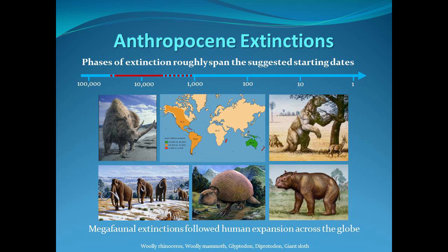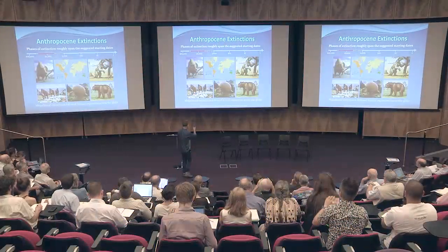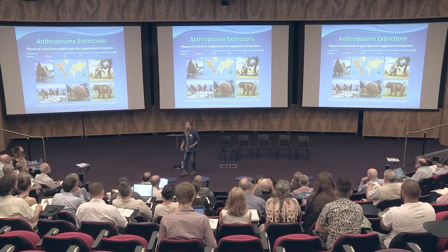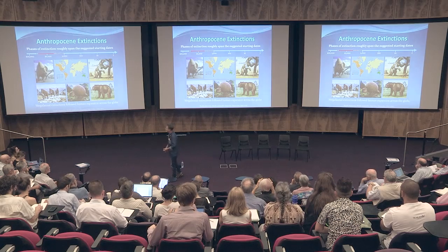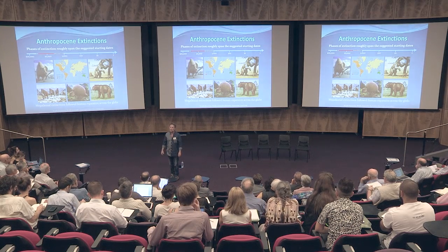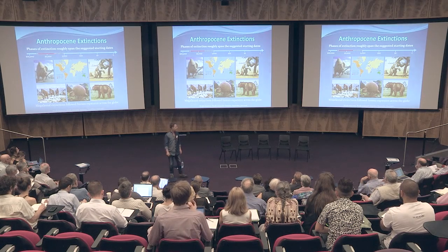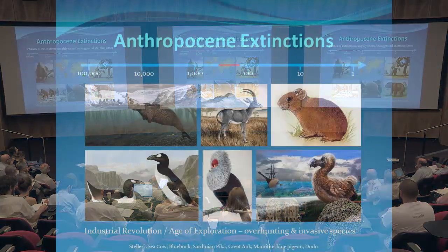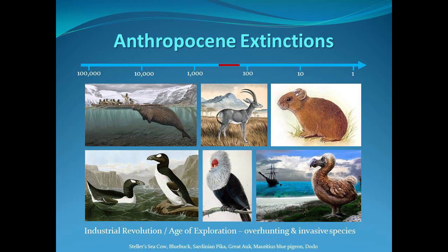We've just heard about the megafaunal extinctions and the strong connection between human spread around the planet and the disappearance of the megafauna. Probably by hunting - these are very slow reproducing large animals, kind of dumb if they haven't seen predators like humans before. They're easy to kill and provide a lot of meat. They roughly span the paleo and early agricultural period.